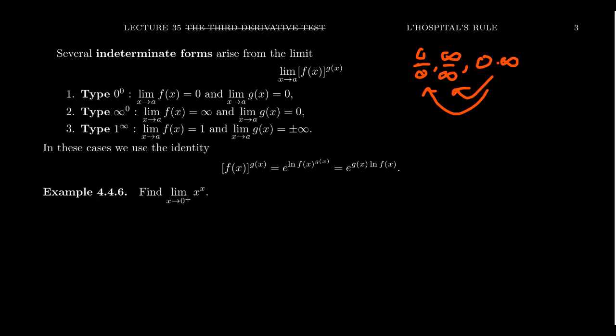It turns out there are several other indeterminate forms — three of exponential type that we want to talk about in this video. They are going to look like 0 to the 0, infinity to the 0, and 1 to the infinity. That is, we're going to be taking limits of the form: the limit as x approaches a of f(x) to the g(x), where plugging a into f and g gives us things like 0 to the 0, infinity to the 0, and 1 to the infinity.